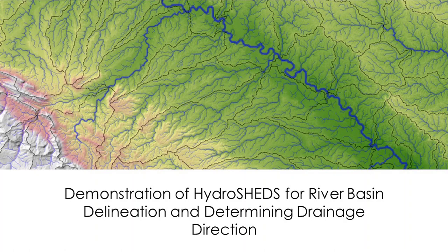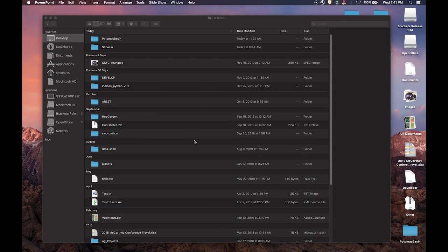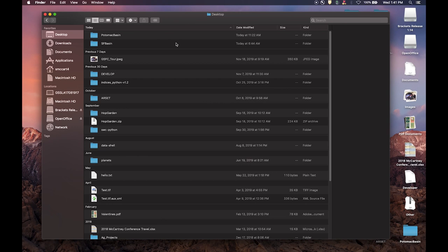One important detail is that flow direction or drainage direction uses ESRI flow direction numbers, with eight possible directions for flow. The data values represent these directions numerically. With that brief introduction, we will now have a demonstration of how to actually delineate a river basin and watersheds. Sean McCartney will demonstrate HydroSheds for river basin delineation and determining drainage direction.